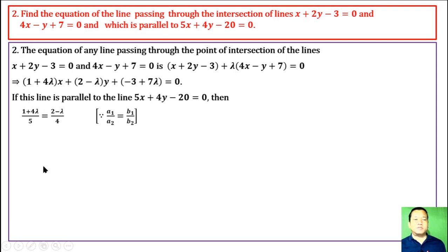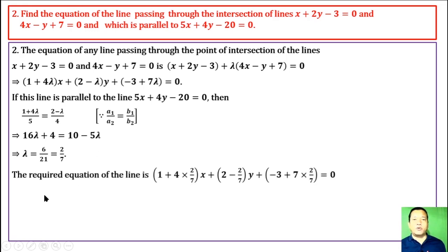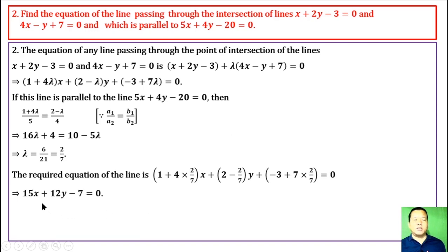Using this result, cross-multiplying and solving for λ gives λ = 2/7. Putting this value into the above equation, the required equation of the line is: (1 + 4·(2/7))x + (2 - (2/7))y + (-3 + 7·(2/7)) = 0. Solving, we get 15x + 12y - 7 = 0.